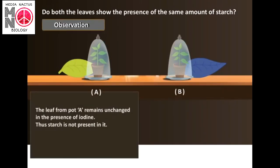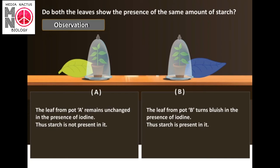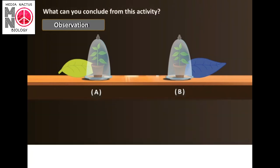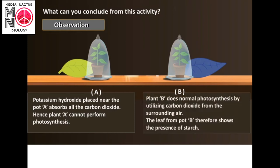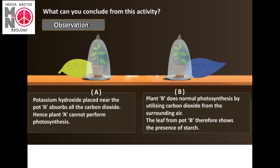Observation: The leaf from plant A remains unchanged in the presence of iodine — starch is not present. The leaf from plant B turns bluish in the presence of iodine — starch is present. Conclusion: Potassium hydroxide placed near plant A absorbed all the carbon dioxide, so plant A cannot perform photosynthesis. Plant B performs normal photosynthesis using carbon dioxide from the surrounding air and shows the presence of starch. This experiment proves that carbon dioxide is necessary for photosynthesis.